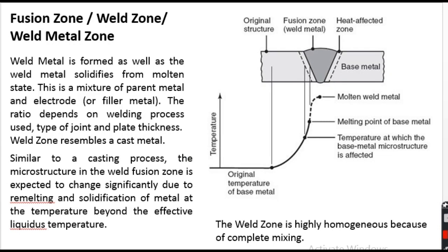First is the fusion zone, also known as the weld zone or the weld metal zone. It forms at the center of the weld. Here, the weld metal solidifies from the molten state. This solidification mechanism is almost similar to that of a casting. This zone is a mixture of parent metal and electrode, and the ratio of the parent metal to electrode material depends on the type of welding process, the type of joint, and the plate thickness.